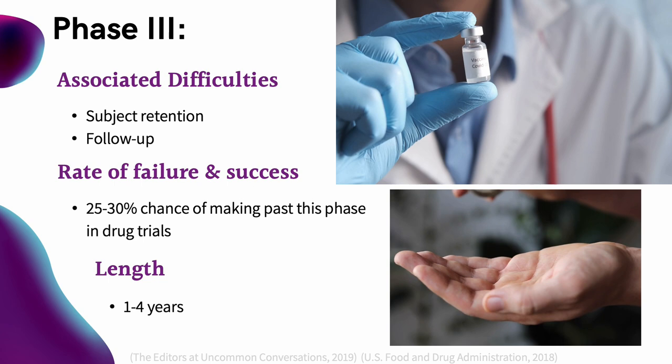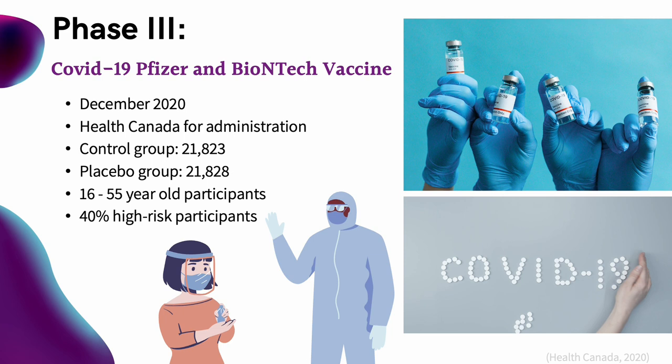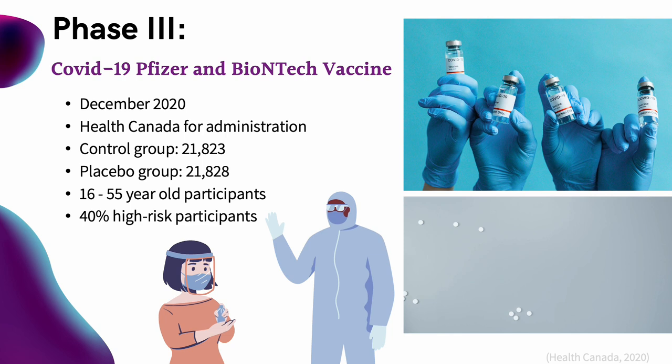In early December 2020, Health Canada approved the Pfizer-BioNTech vaccine for administration. Pfizer reports having used a randomized placebo-controlled trial in their Phase 3 process, with a control group of 21,823 people and a placebo group of 21,828 people. After approximately 21 days, a second dose was administered, and the results of this controlled trial led to the approval. The participants were 16 to 55 years old, with 40% of them being high risk as they were over 55 years old.